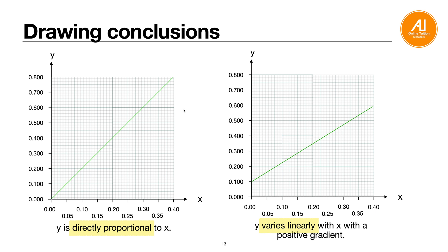When drawing a conclusion, the question usually asks for the relationship between the two variables. There are two types: if you have a straight line passing through or very near the origin, you state that y is directly proportional to x. If you have a straight line that does not pass through the origin, you state that y varies linearly with x — adding 'with a positive gradient' or 'with a negative gradient' depending on whether the line slopes up or down.